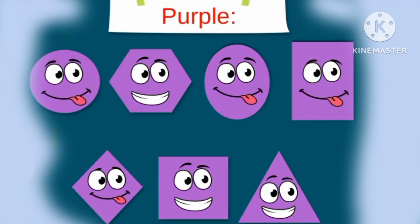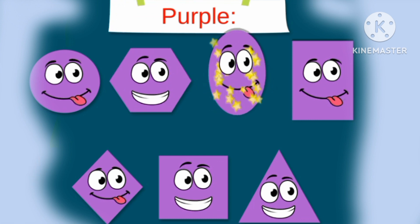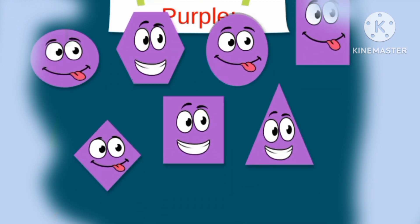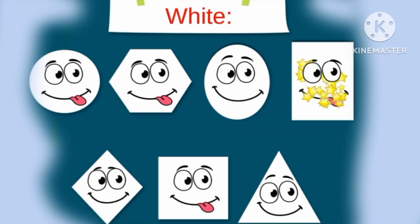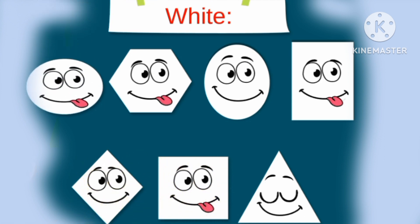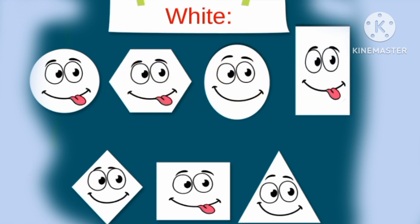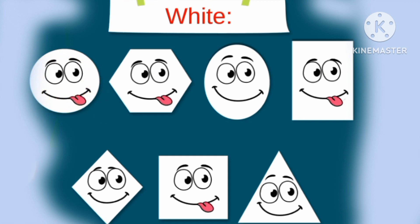Purple. Purple rectangle, purple circle, purple hexagon, purple oval, purple rhombus, purple square, purple triangle. P-U-R-P-L-E. Purple. White: white rectangle, white triangle, white square, white numbers, white oval, white hexagon, white circle.